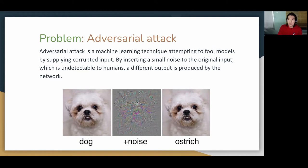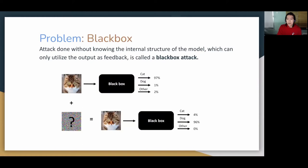Adversarial Attack is a machine learning technique that attempts to fool the model by supplying corrupted input. By inserting a small noise to the original input, which is undetectable to humans, a different output is produced by the network.